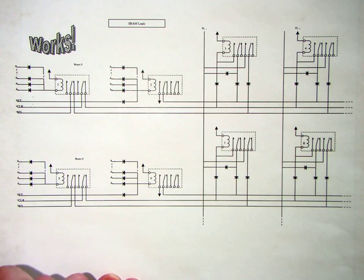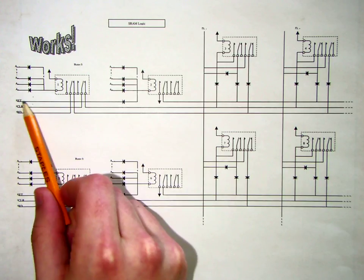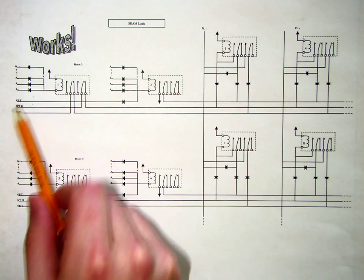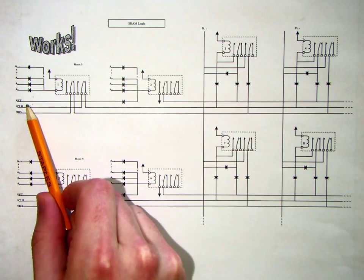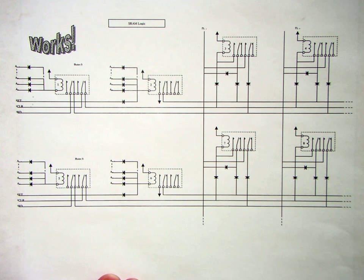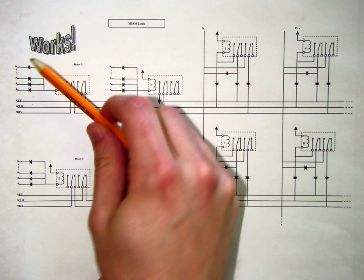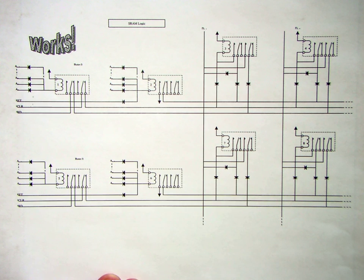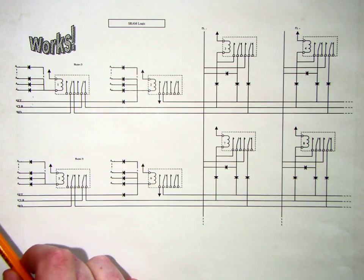Those are used to control the control signals. We have an active high set signal, an active low clear signal, and an active low read signal. Those are enabled when this set of address inputs match a particular combination that we need for that memory location.